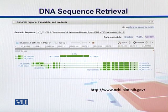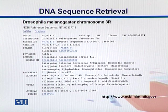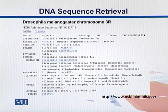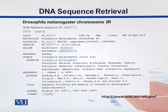Let's click GenBank and see what this entry looks like. Again we see the name of the gene and the locus, where its ID is written. The length of the gene is 4426 base pairs. The DNA is a linear type. Then we have the submission date. Then the definition line, describing the organism's name and the chromosome from which it's coming. We also have the accession and the regions in the genome from which it's coming.